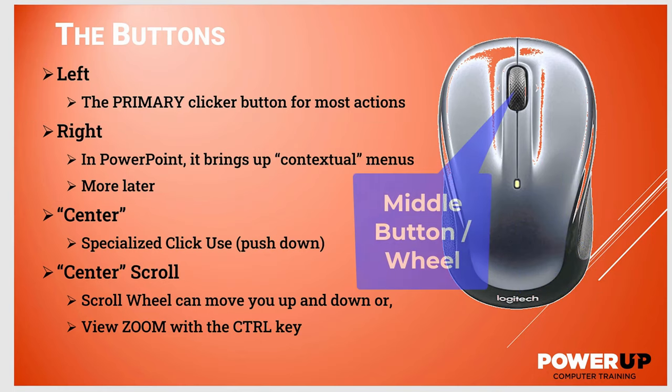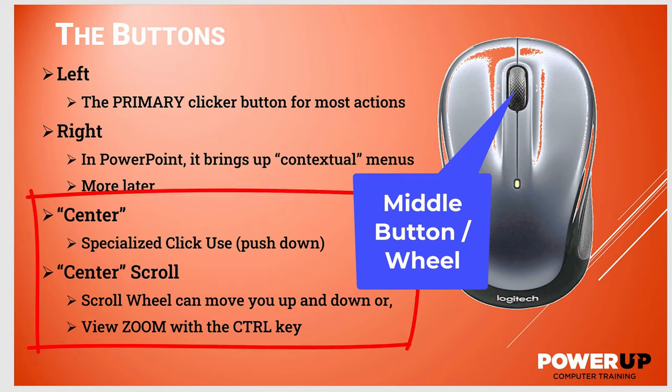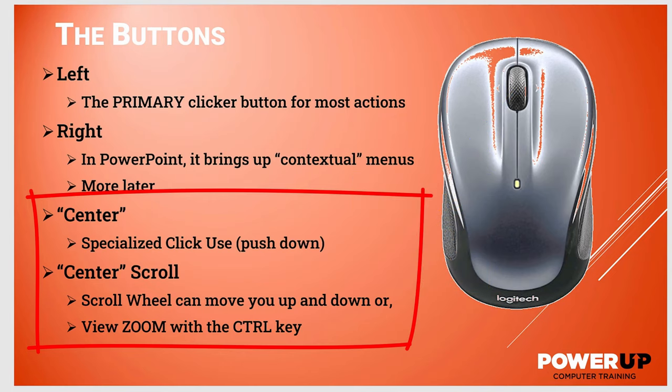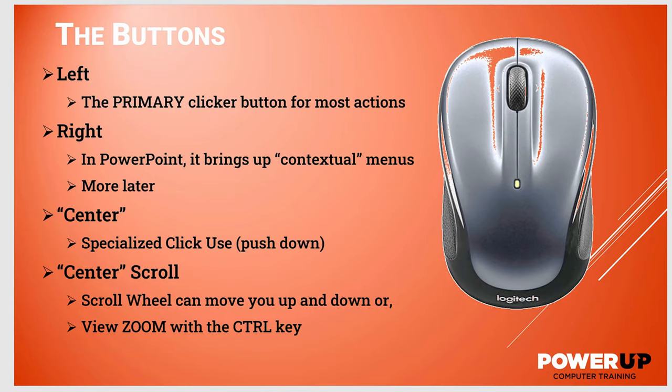The middle button in the center is often both a button and a wheel, and will be found on almost all modern mice. In the early days, there were just two-button mice. The center wheel button does double duty — it can click. Some people don't realize you just press down on the wheel. Plus it rolls forwards and backwards to scroll through a list.